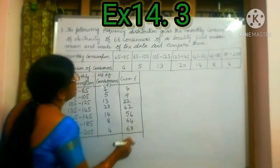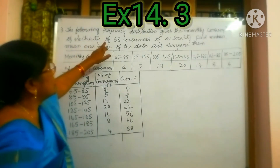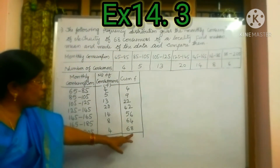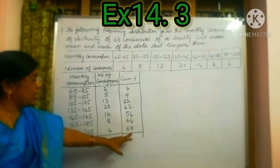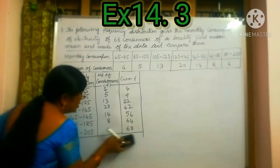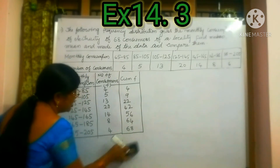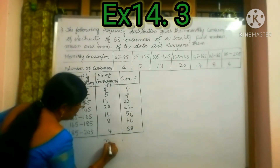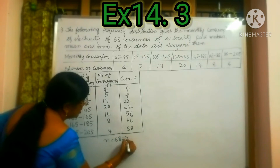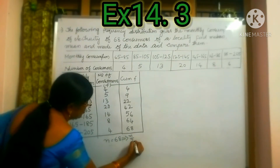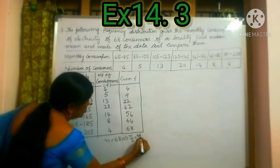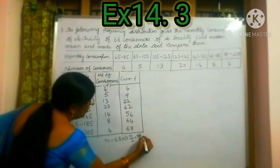The total number of consumers is 68. So the number of observations N is equal to 68, which gives us N by 2 is equal to 68 by 2, that is 34.